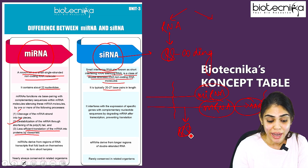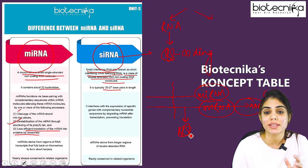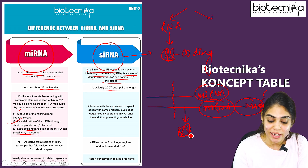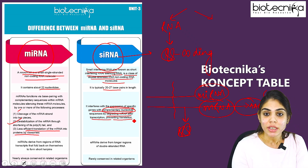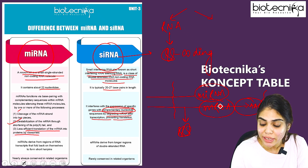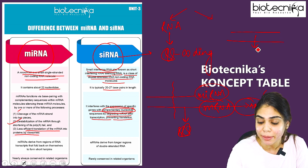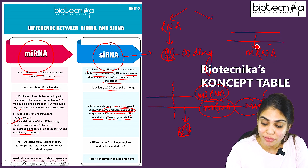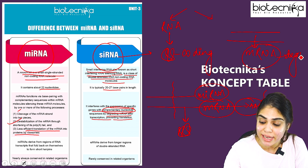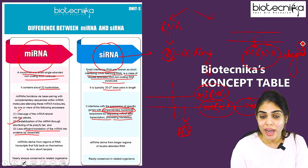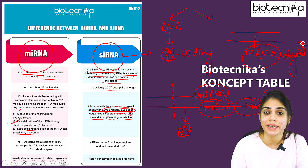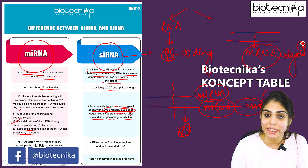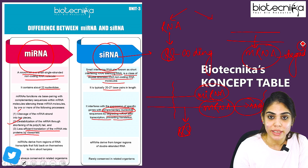Now let's see the case of siRNA. You have seen three mechanisms how miRNA causes translational arrest. Whereas siRNA interferes with the expression of specific genes with complementary nucleotide sequences by degrading mRNA after transcription, thereby preventing translation. siRNA is a double-stranded RNA molecule that binds to the mRNA and causes its degradation. So siRNA prevents translation by degradation of mRNA, whereas miRNA causes destabilization, cleavage, or less efficient translation.